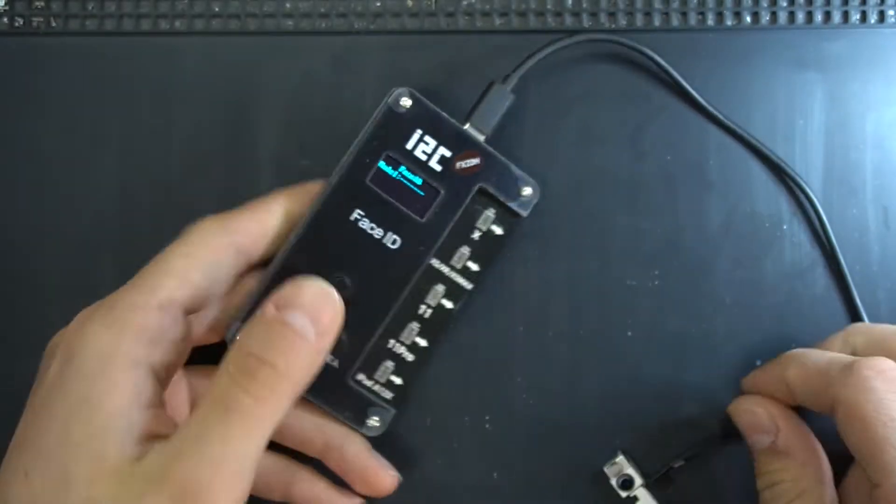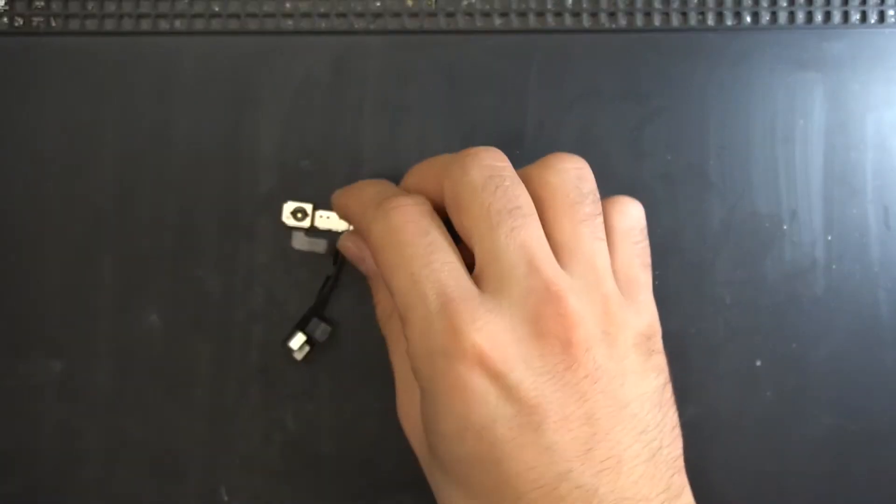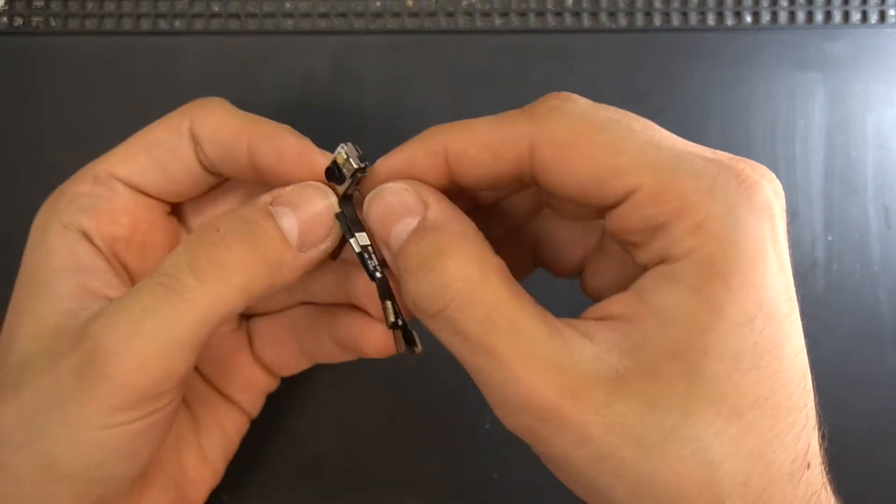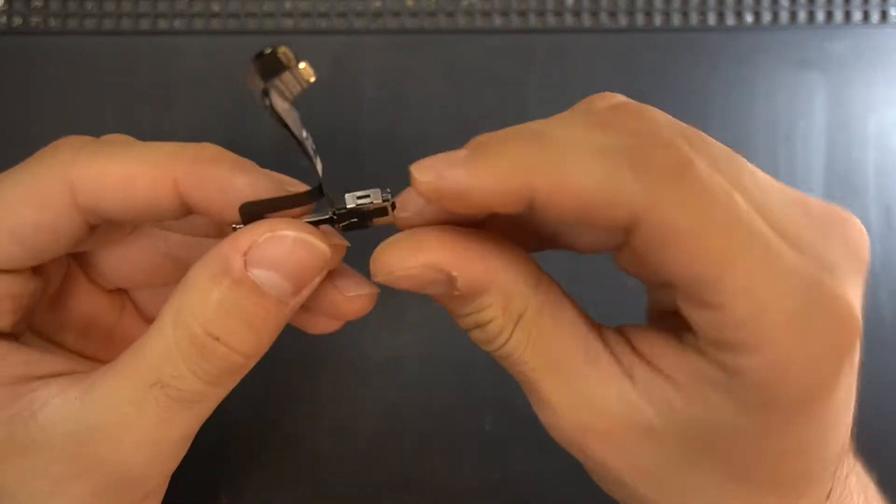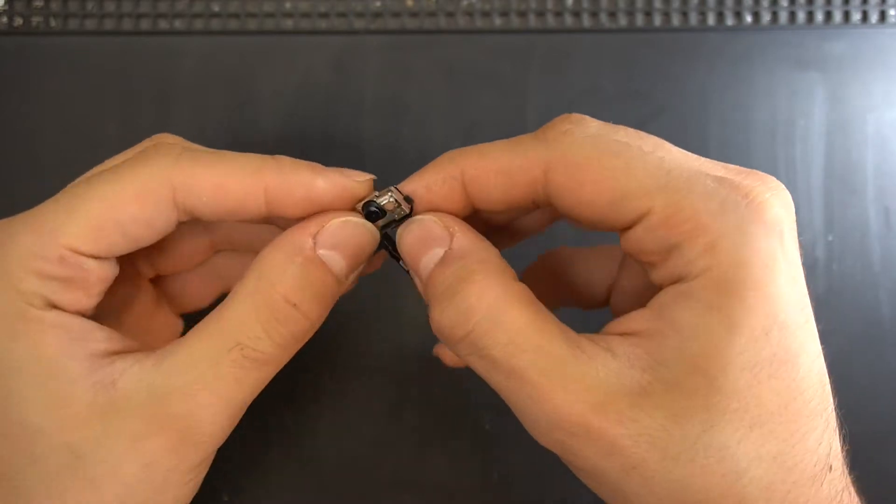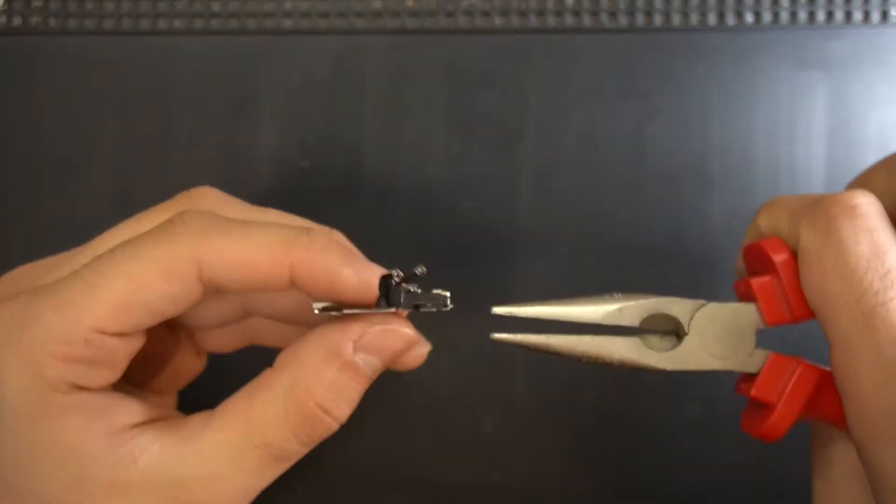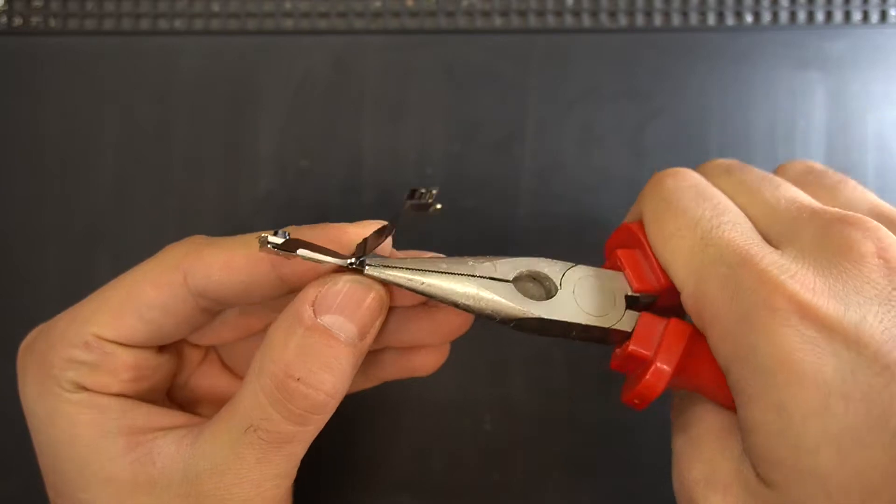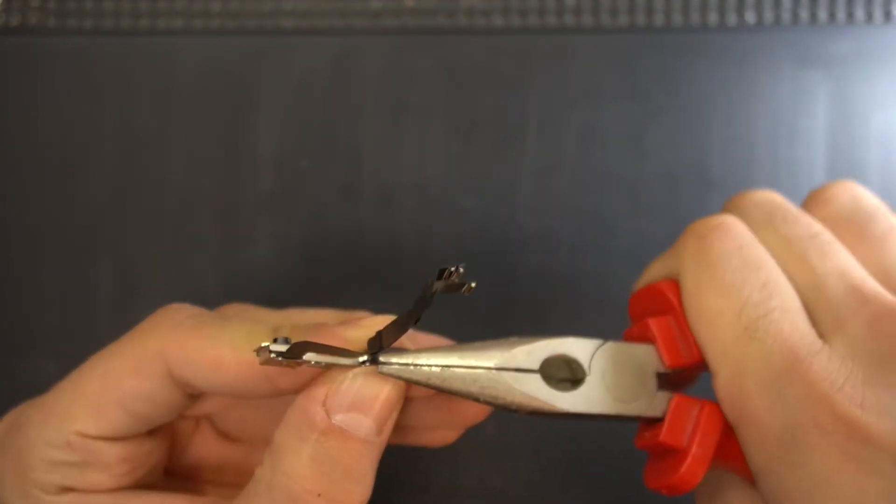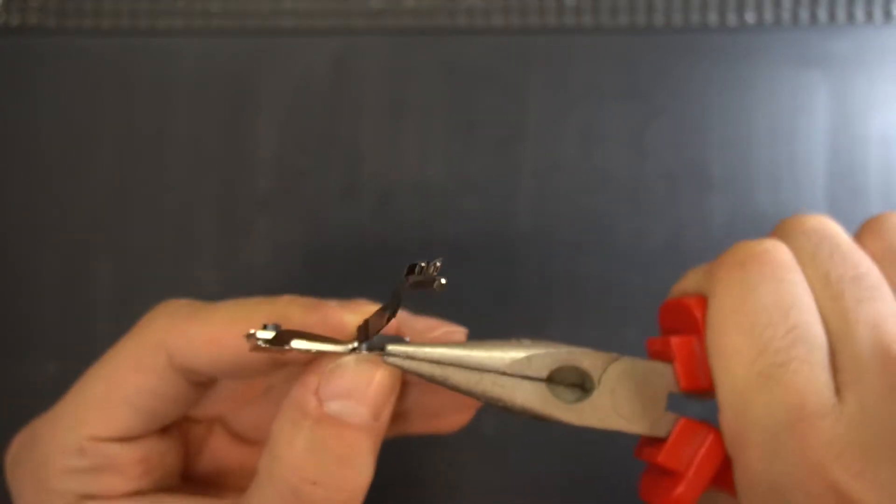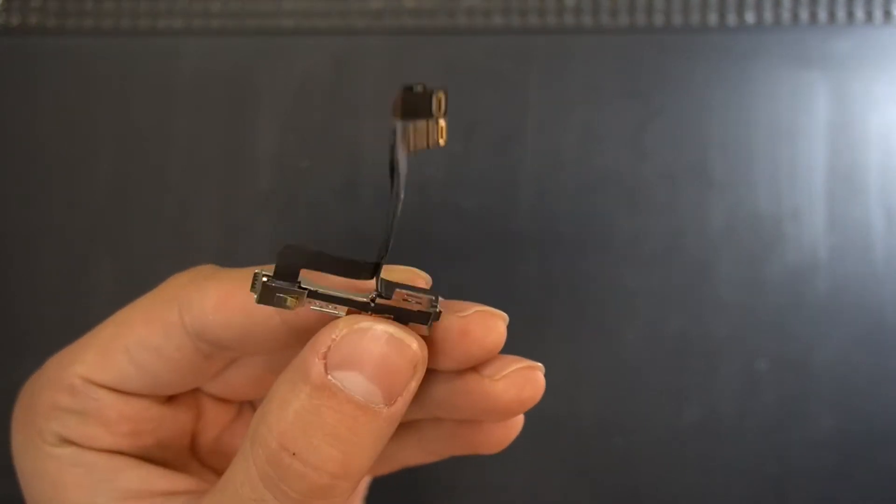The iPhone 11 Pro dot projector housing has a barrier which needs to be bent so you can take out the dot projector. Just gently with your fingernail bend it a little, and then using needle nose pliers just bend it all the way to make enough room to take out the dot projector.